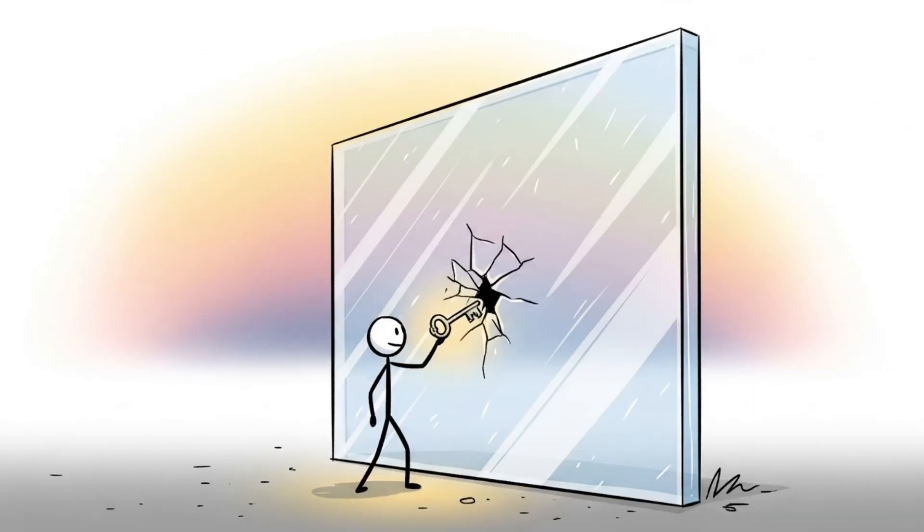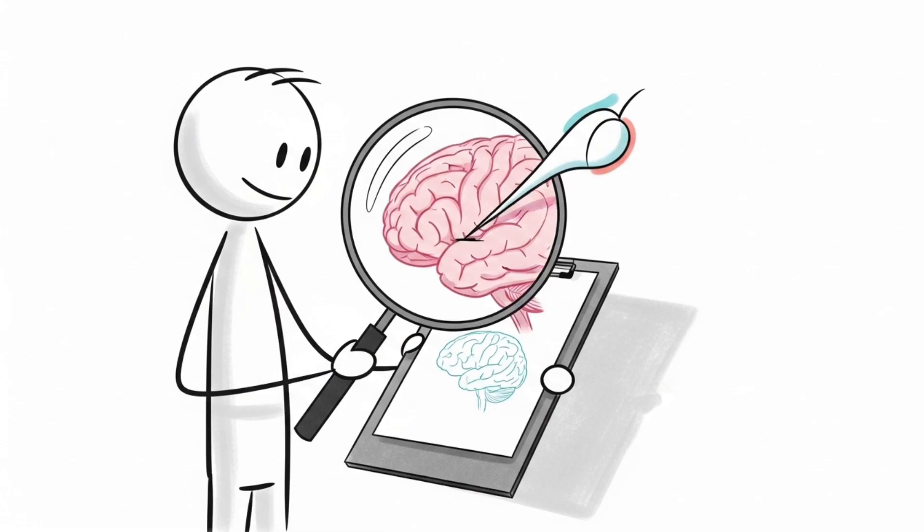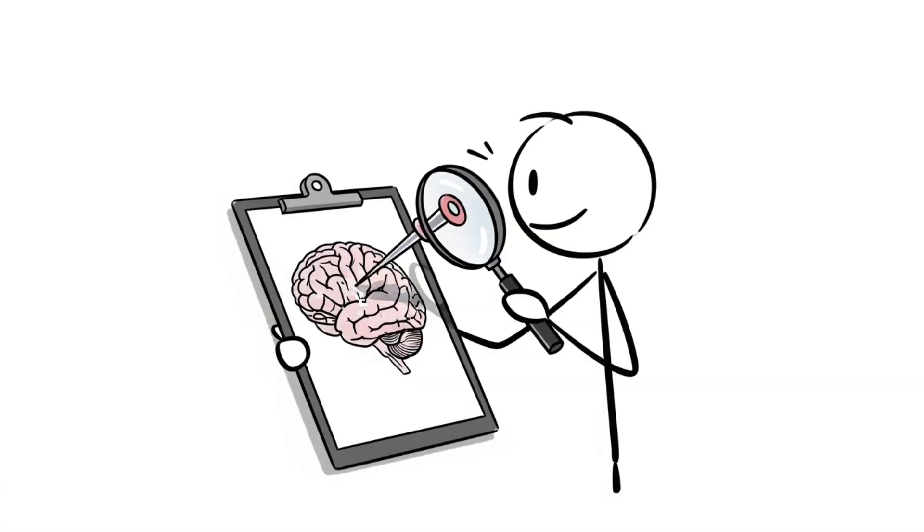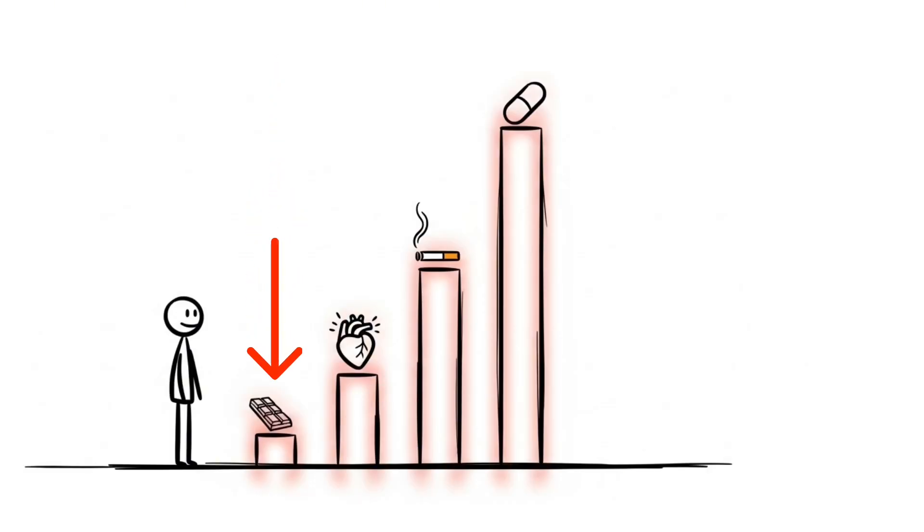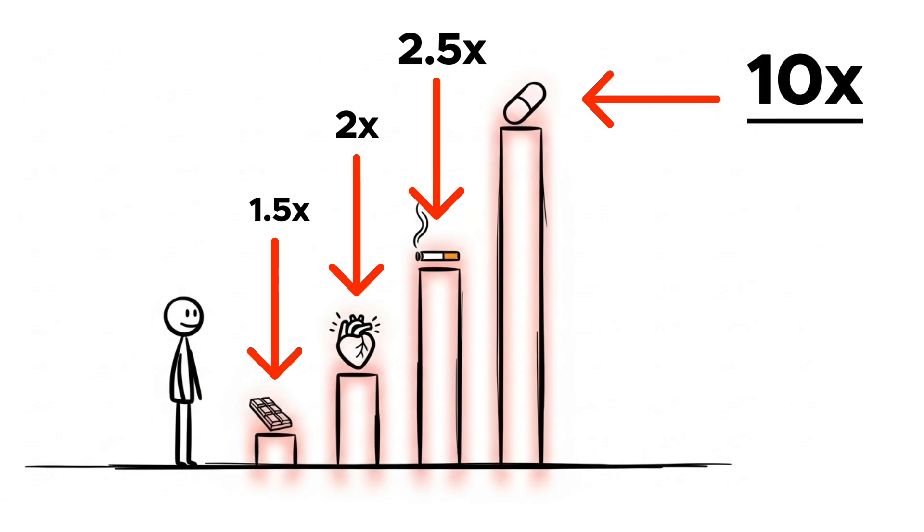The path to freedom is not through sheer willpower, but through a strategic mastery of this system. To master the system, you must first quantify it. We can measure dopamine spikes accurately using microdialysis. A simple piece of chocolate elevates dopamine by 1.5 times the baseline. The pursuit and act of sex is 2 times, nicotine is 2.5 times, and a drug like amphetamine is a staggering 10 times the baseline.